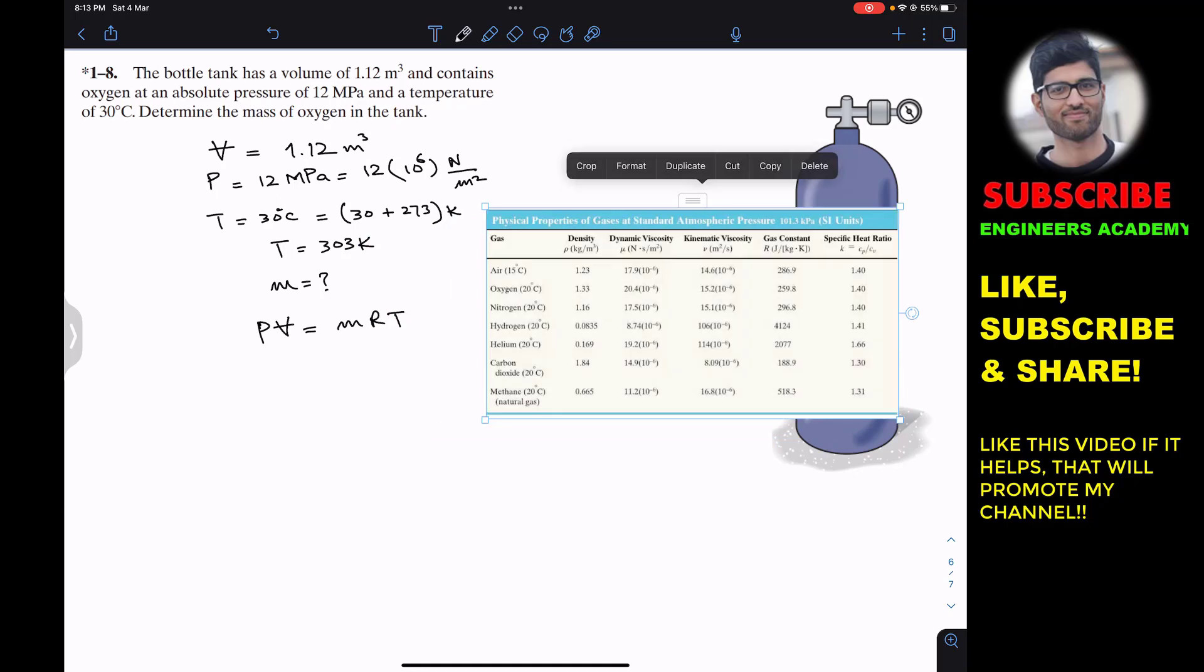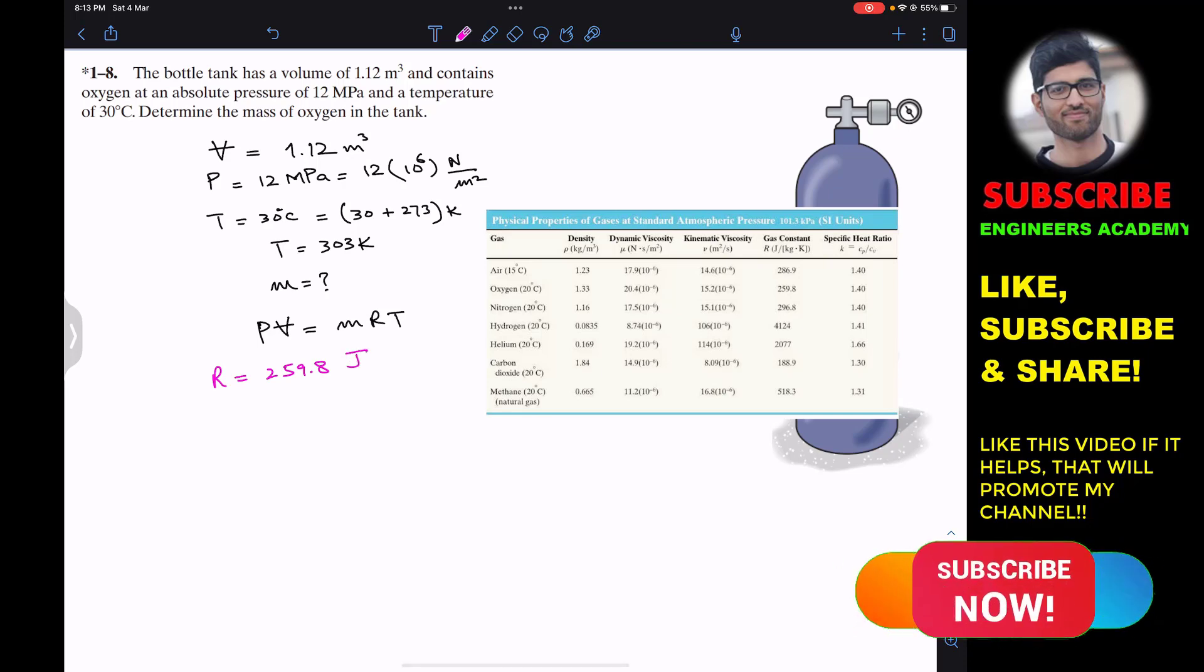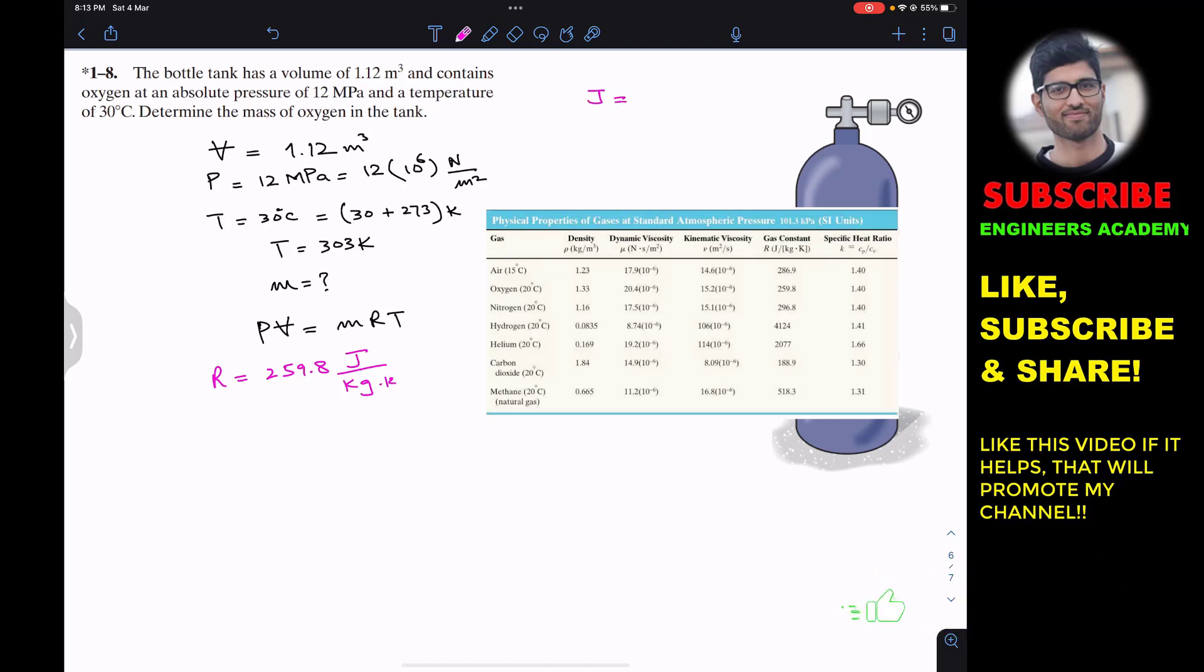The R value for oxygen is 259.8 joule per kilogram Kelvin. Remember that joule is the work done which is always equal to newton into meter, so we can write this as 259.8 newton meter per kilogram Kelvin.